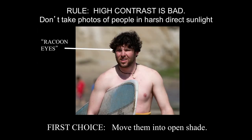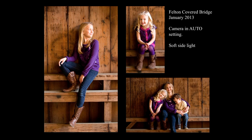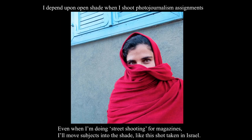A big rule is that high contrast is bad, especially for people photos. Don't take photos of people in harsh, direct sunlight — they're going to be squinting and you'll get raccoon eyes, like the example with the surfer. The first choice is to move them into open shade. These are some shots I took of grandkids at the Felton covered bridge a few years ago, with my camera set on auto for a clothing catalog — just soft side light with no direct light hitting them. I depend on open shade when I shoot photojournalism assignments too. Even when doing street shooting for magazines, I'll move subjects into the shade, like a shot I took for a magazine cover in Israel.